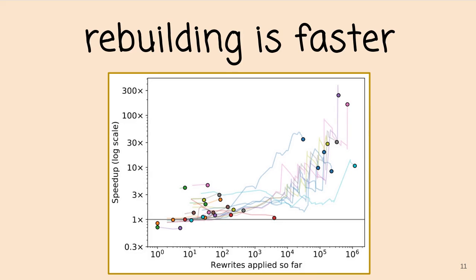We evaluated this and it is indeed faster. Here you can see all of these points are above the 1x line, indicating that the egg way ranges from about as fast to up to 300 times faster.